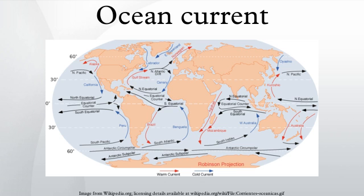Ocean currents are important in the study of marine debris. These currents also affect temperatures throughout the world. For example, the current that brings warm water up the North Atlantic to Northwest Europe stops ice from forming by the shores, which would block ships from entering and exiting ports. The currents have a decisive role in influencing the climate of the regions they flow through. The cold currents that flow from the polar and sub-polar regions bring in a lot of plankton, and since this is the food of the fish, you can find a lot of fish where these currents pass through.